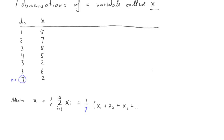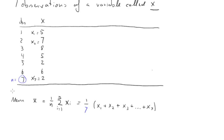The sum of all x_i means x1 plus x2 plus x3 and so forth all the way up to the nth observation. Here are our observations — the first is 5, which is x1, the next is x2, and so forth, the last being x7. The sum works out to 35, so x-bar is 1 over 7 times 35, which equals 5. Our sample mean x-bar is 5.